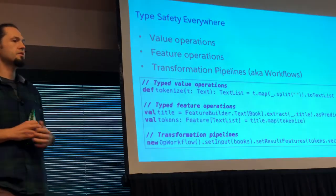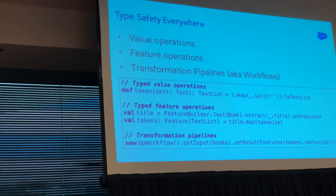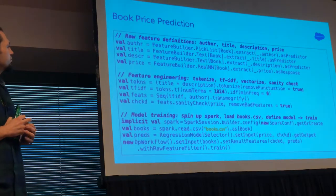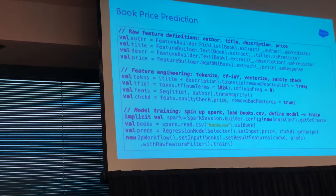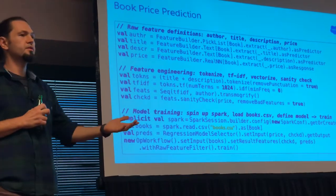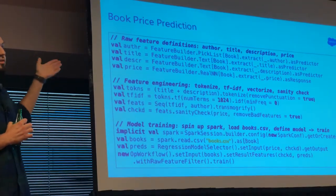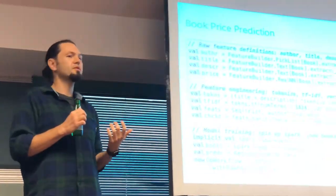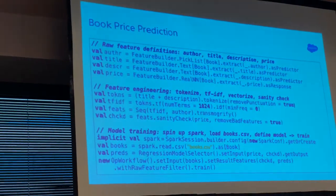A workflow is a set of stages applied to the data before it's consumed by a machine learning application. They're also typed. Here's all the code you need to write to predict the price for a book. Let's say we have a little dataset with three predictive columns and one response — we want to predict how much the price of the book will be based on the author, title, and description of the book. Maybe a more detailed description with a more precise explanation of what the book is about will allow us to provide a better price prediction.